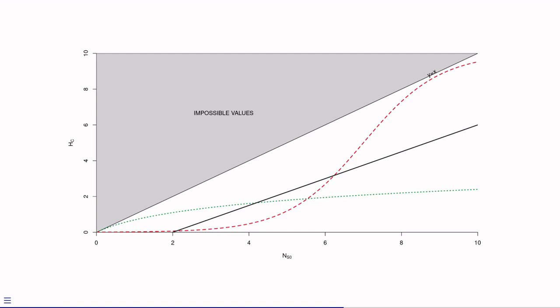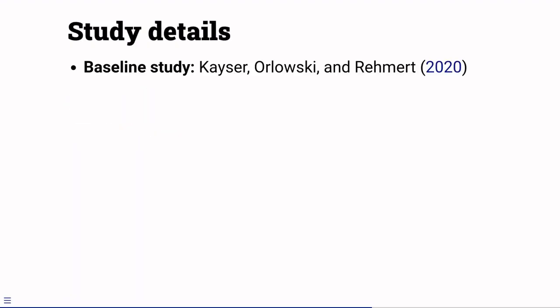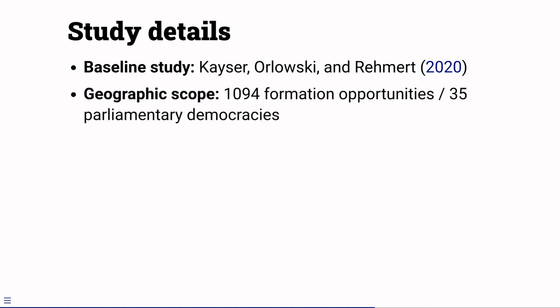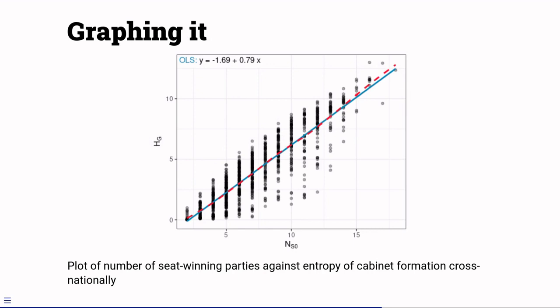In my first study, I extend Kaiser, Orlovsky and Rehmert's study of coalition inclusion probabilities in parliamentary democracies. I include data for 1094 formation opportunities in 35 parliamentary democracies between 1945 and 2022 using data from the well-known PearlGov project. I use Kaiser, Orlovsky and Rehmert's model of coalition formation. I store the predicted probabilities of each coalition forming, and I use this to calculate entropy. This is what it looks like when plotted against the number of seat winning parties. The solid line is a straight line, and the dashed line is a local smooth. You can see that the local smooth is almost identical to the linear fit. Each additional party increases entropy by between three quarters of a bit and four fifths of a bit.